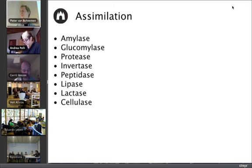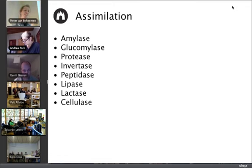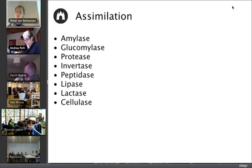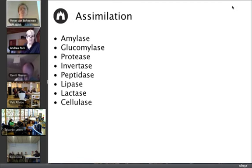The enzymes responsible for breaking down nutrients have very recognizable names — they always end with '-ase.' For example, amylase breaks down starch, lipase breaks down lipids, and cellulase breaks down cellulose. These names are quite easy to interpret: cellulase breaks cellulose down into separate elements.